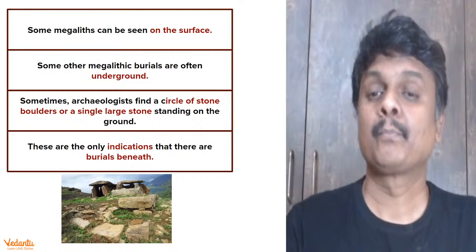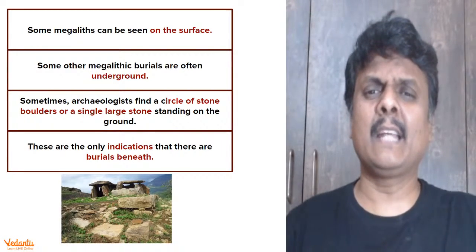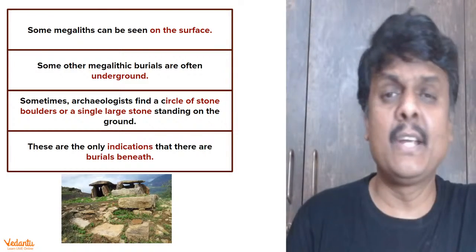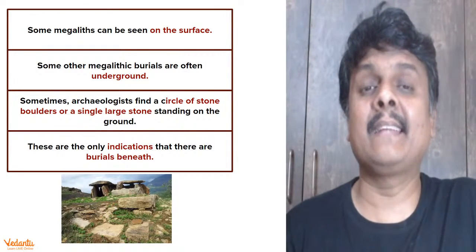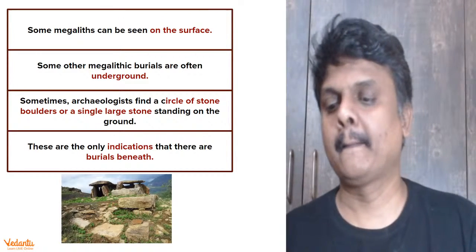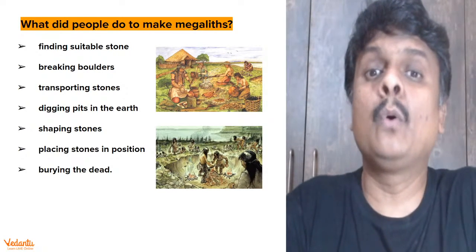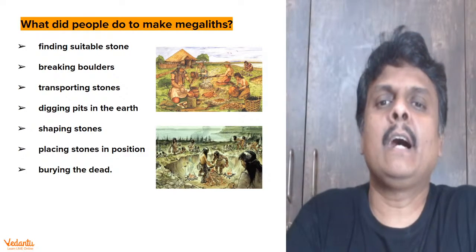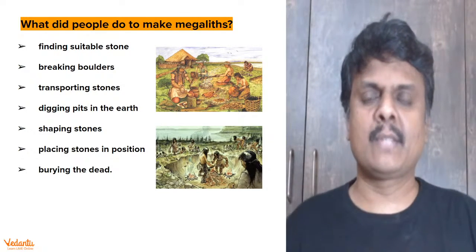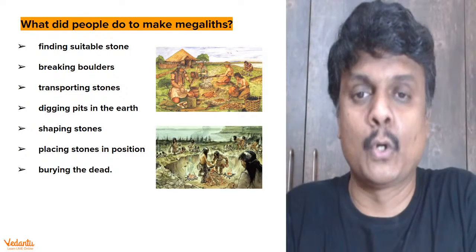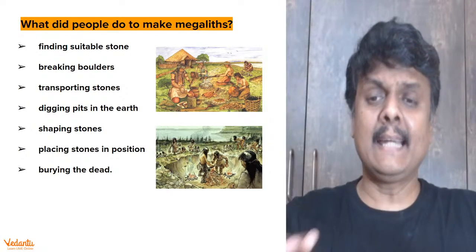Why did people erect megaliths rather than just burying and leaving? They respected the dead and wanted to be able to locate them later to worship and perform rituals. By erecting megaliths you can locate the burial site. To make megaliths, people first locate a suitable stone, break boulders for support, transport the stones, dig pits in the earth, shape the stones, bury the dead and place stones in position.